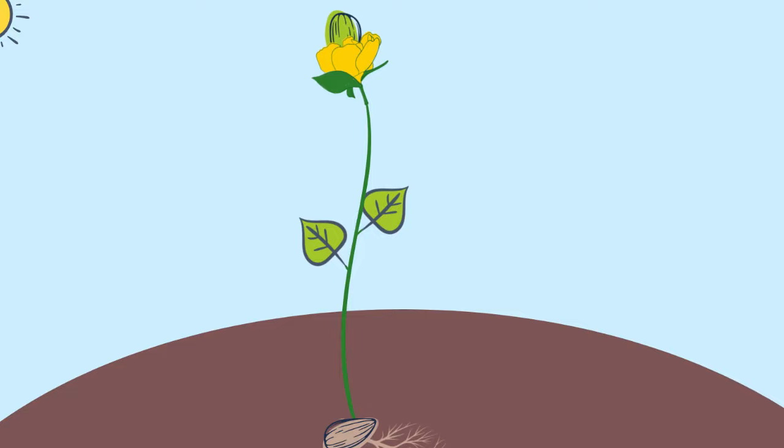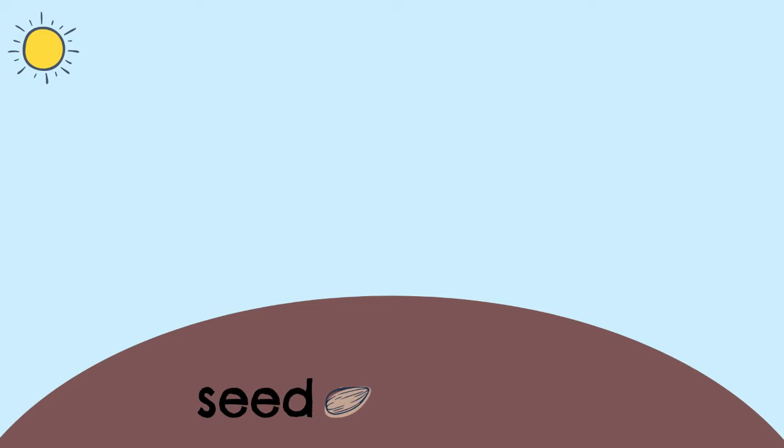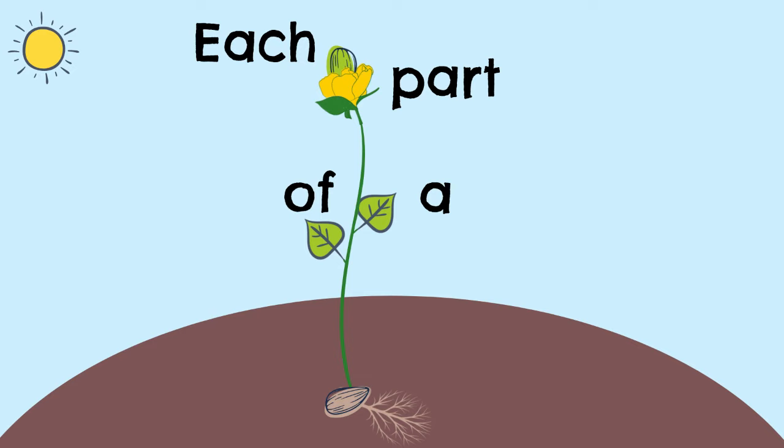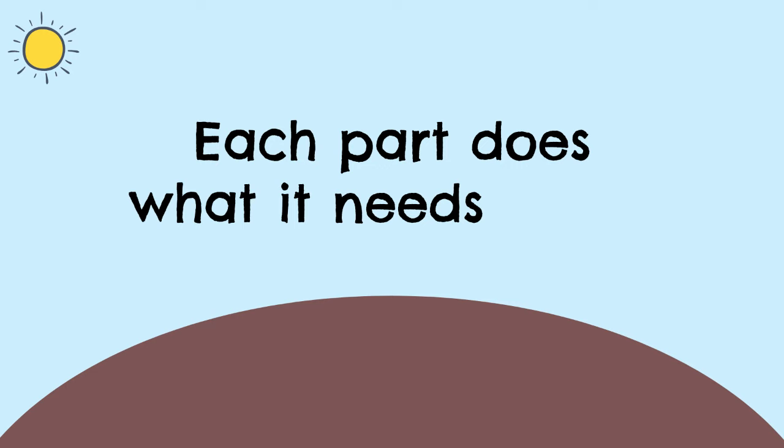There are different parts of a plant. A seed, root, stem, leaves, flower, fruit. Each part of a plant has a purpose. Each part does what it needs to do.